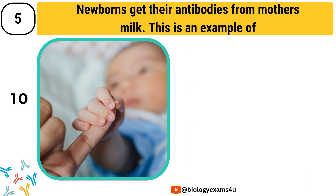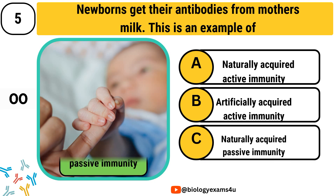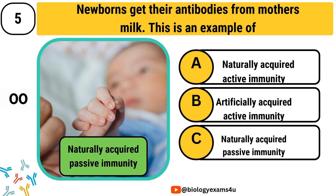Question number 5. Newborns get their antibodies from mother's milk. This is an example of: Option A, naturally acquired active immunity. Option B, artificially acquired active immunity. Option C, naturally acquired passive immunity.